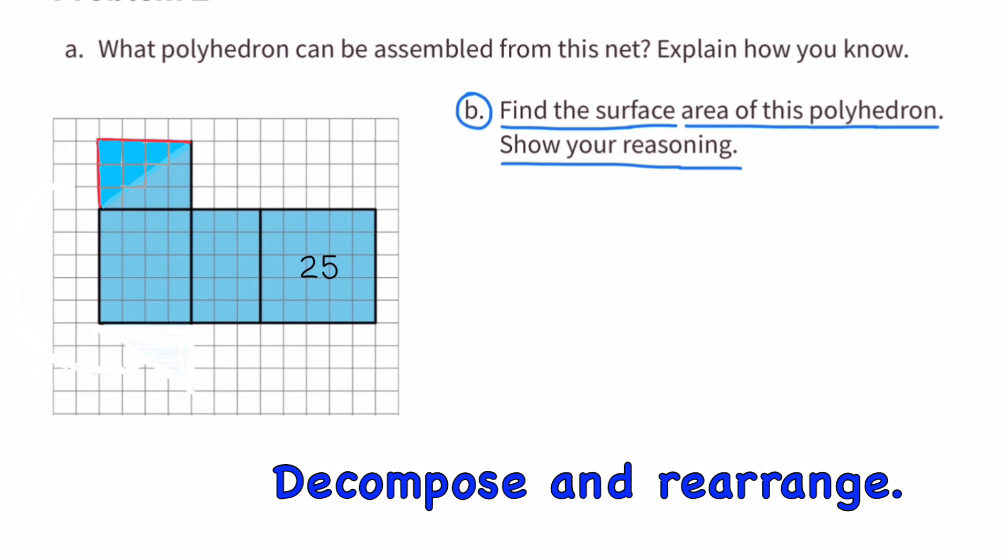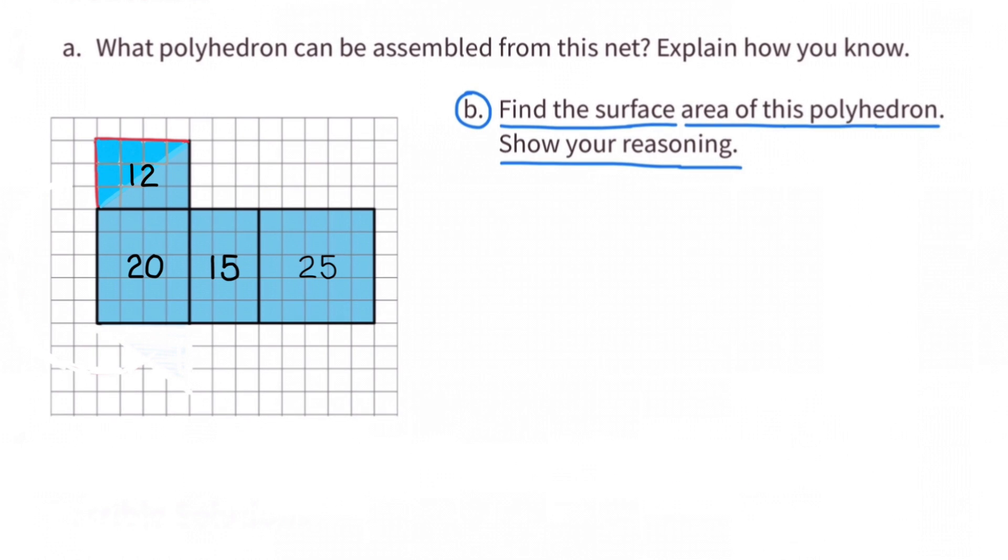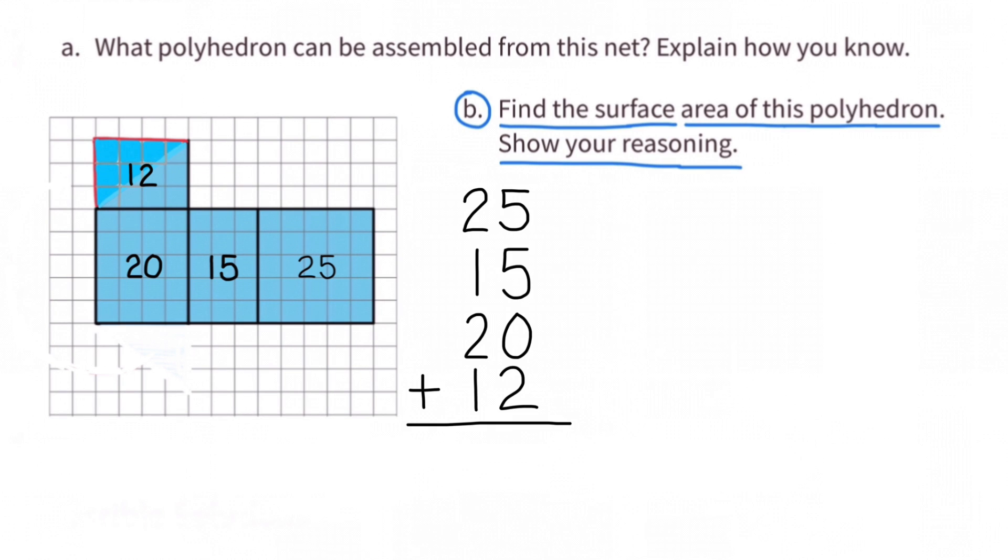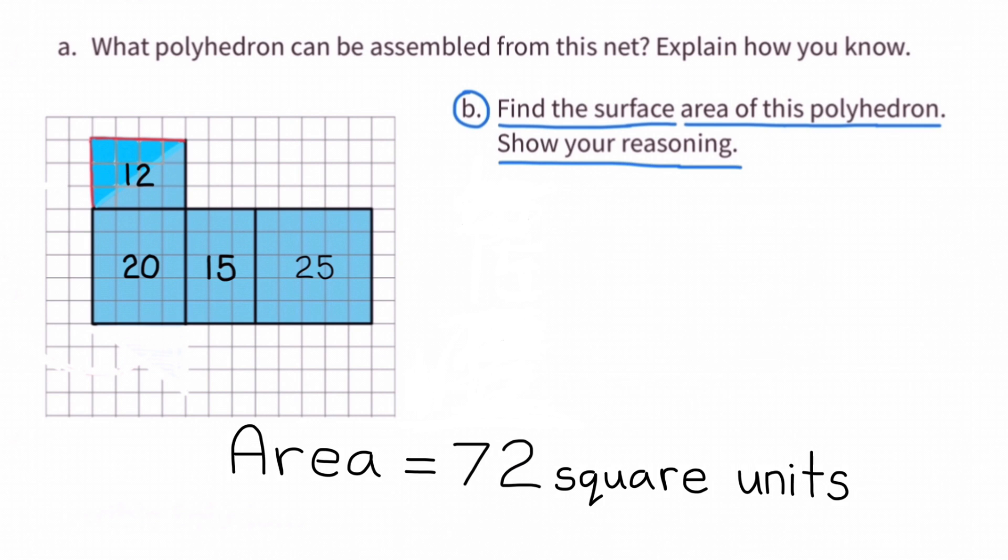The areas of these figures are 25 square units, 15 square units, 20 square units, and 12 square units. Add all of their areas up, and the area of the original figure is 72 square units.